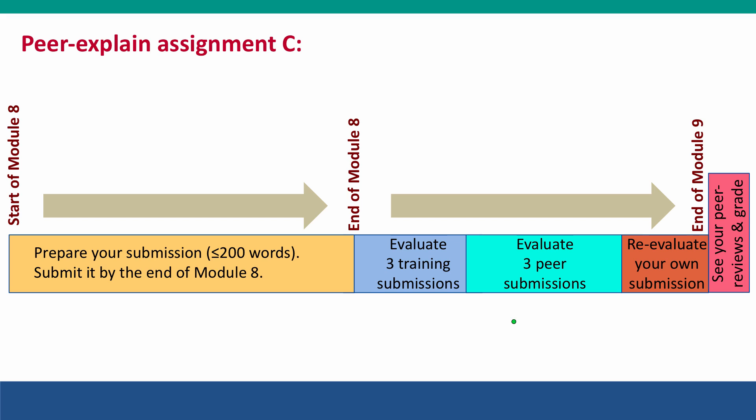As a student, you will first grade three training submissions that will give you practice in identifying strong points and weak points. And then you will get three submissions from your fellow students to grade. You can grade more if you like. Then you'll go back and re-evaluate your own submission in the light of what you've learned by looking at other submissions. Once the second deadline is reached at the end of Module 9, you'll be free to look at the evaluations that other students gave to your submission.